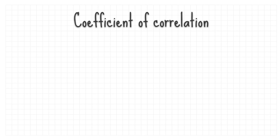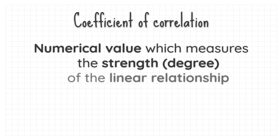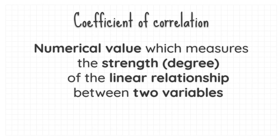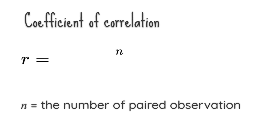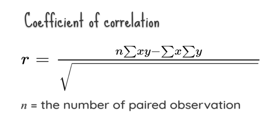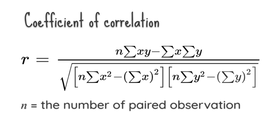The coefficient of correlation is a numerical value which measures the strength or degree of the linear relationship between two variables, given by: r equals n (the number of paired observations x and y) times the summation of xy, minus the summation of x times the summation of y, divided by the square root of [n times the summation of x-squared minus the square of the summation of x] times [n times the summation of y-squared minus the square of the summation of y]. Be careful with these two differences.